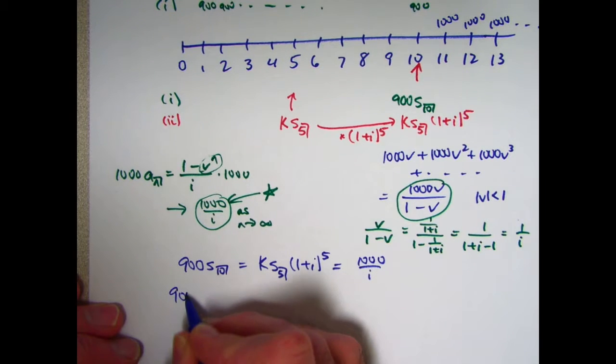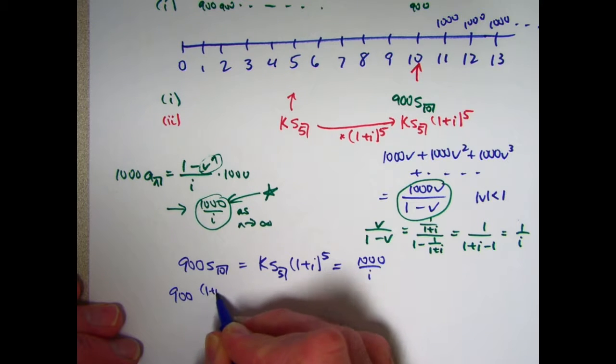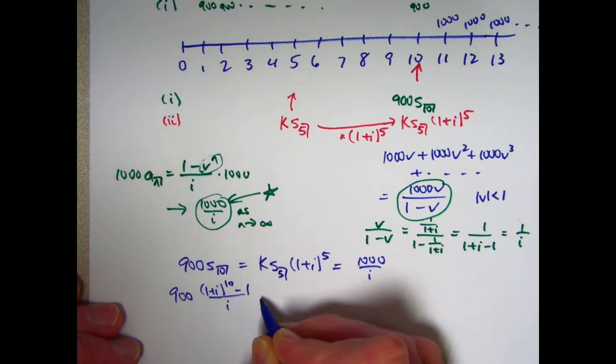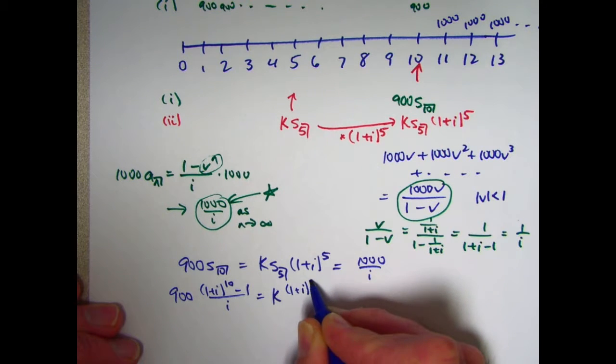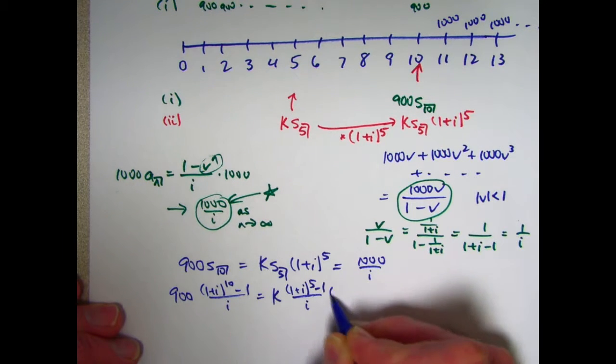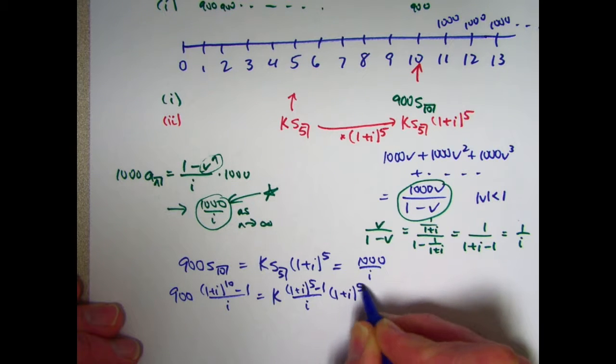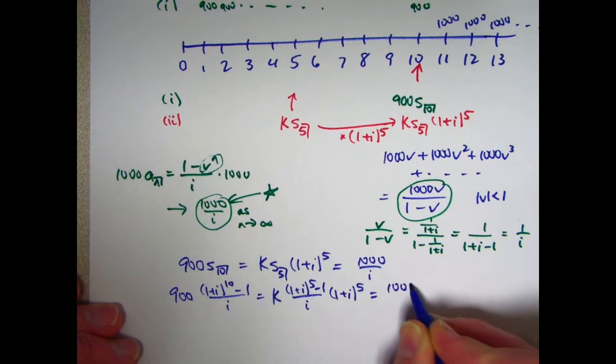Get the formula for s10 and s5. This is going to become 900 times one plus i to the 10th minus 1 over i equals k times one plus i to the fifth minus 1 over i times another one plus i to the fifth equals 1000 over i.